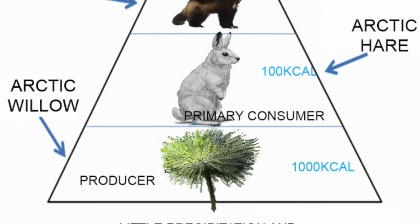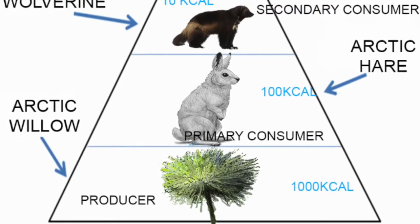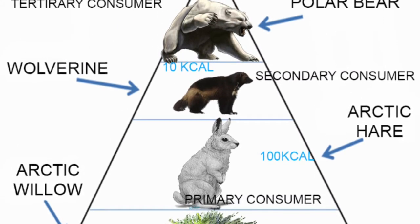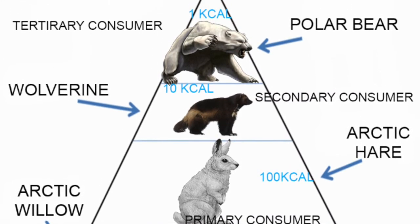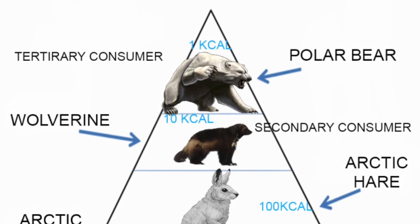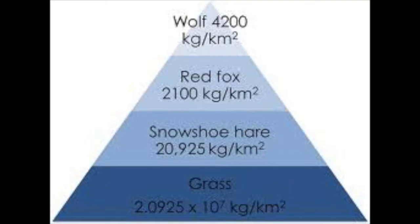This energy pyramid shows how the energy is distributed throughout the different levels as organisms are being consumed by other organisms. The biomass pyramid is like the energy pyramid, except it shows the total mass of the organisms in each level of the food chain.